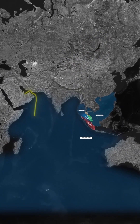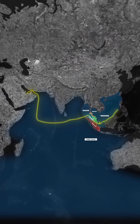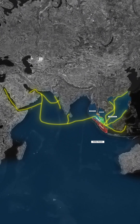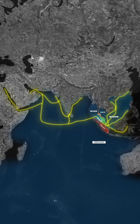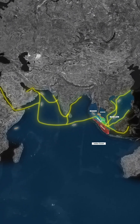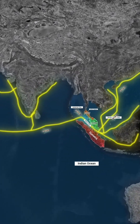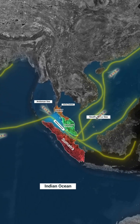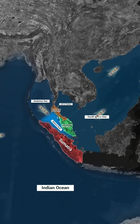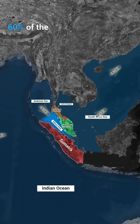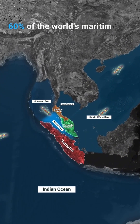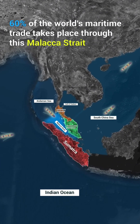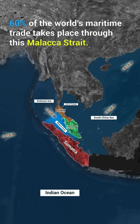It is the shortest sea route between the Middle East and East Asia. The Strait is the main shipping channel between the Indian Ocean and the Pacific Ocean. About 60% of the world's maritime trade takes place through this Molucca Strait.